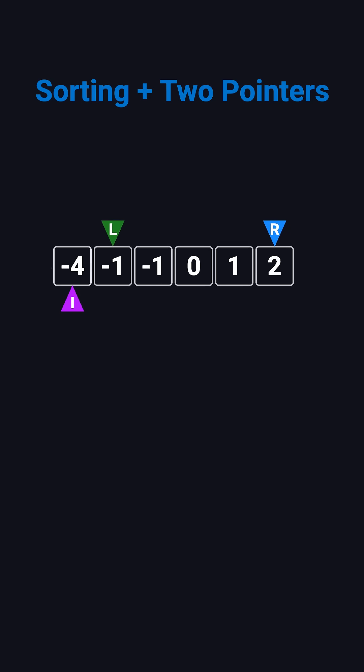Let's continue with the example. First, i is at negative 4. The left pointer starts at negative 1, and the right pointer is at 2. The sum is negative 3, which is less than 0, so we move the left pointer to the right.